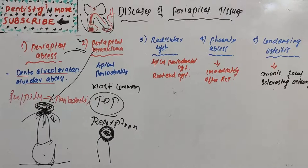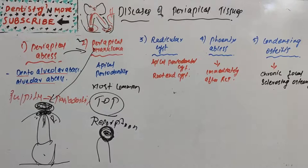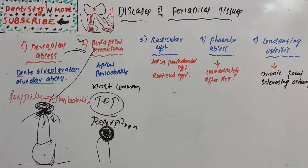Periapical granuloma does not pass through an acute phase — it is mostly chronic in nature, and granuloma formation takes a long time. Histologic features: it begins as hyperemia or edema of the periodontal ligament with infiltration of inflammatory cells, mainly lymphocytes and plasma cells. There is increased vascularity at the site and induction of resorption of the supporting bone.